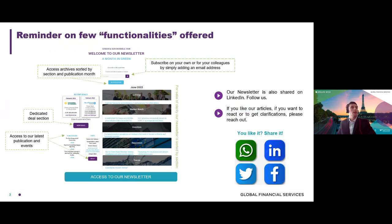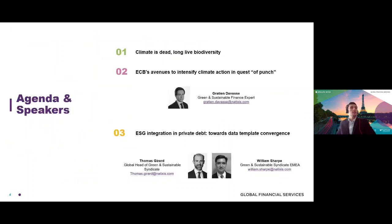Just a quick reminder of where these articles come from: the newsletters that we publish bi-monthly. You can find them on the internet — it's open source. So you can find all the data exposed today on the website with the different articles they refer to. If you like our content, please make sure to follow us on social networks. I'll present the first and second topics on biodiversity and ECB's green tilting mechanism.